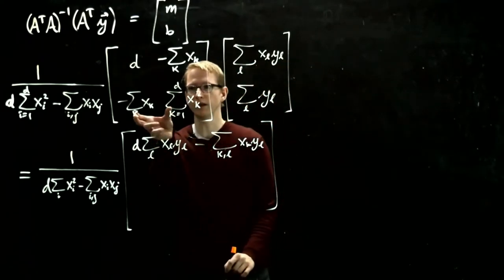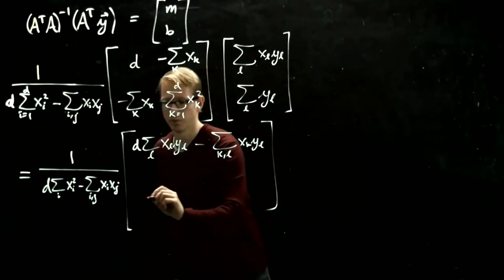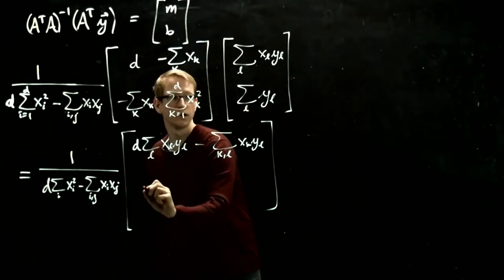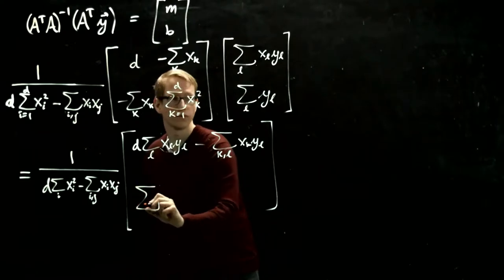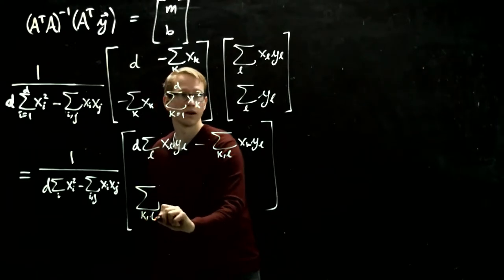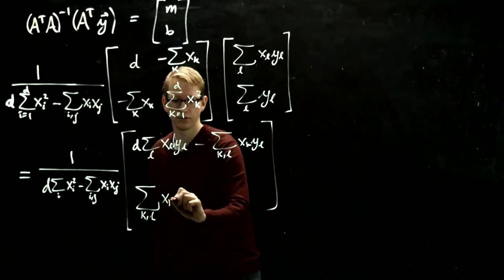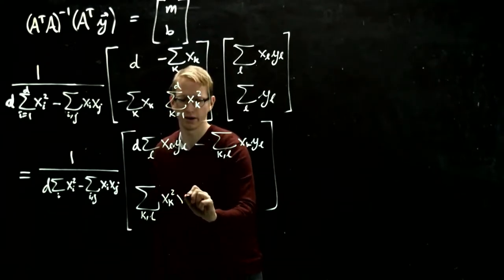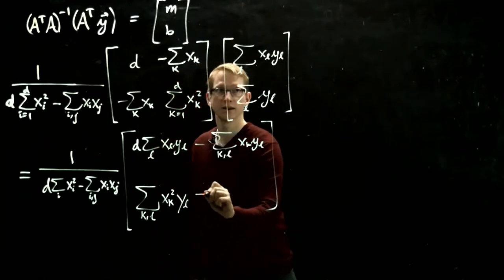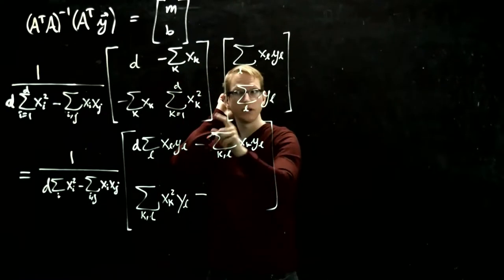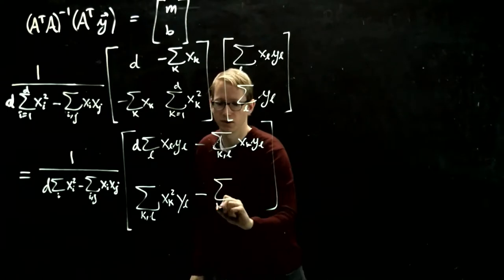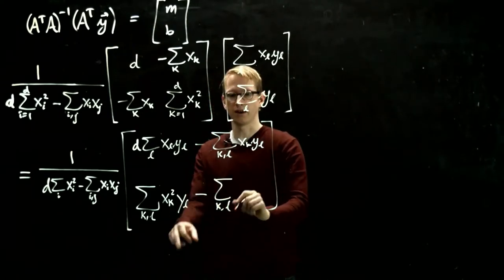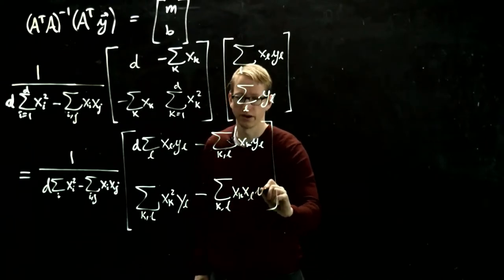And the second component is this times this. Now we have a bunch of stuff going on here, plus this times this. So let me write the plus on the left. This becomes sum over k and l, and xk squared which we can write as, yeah, let's just write it xk squared yl minus xk, now this is a little bit different, right, because we have two sums, k and l, and this time it's not xk squared, it's xk xl yl.